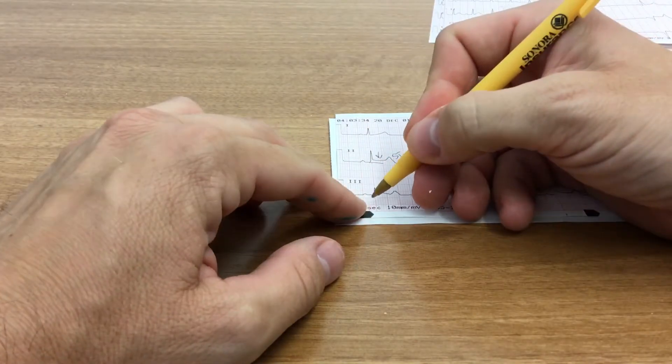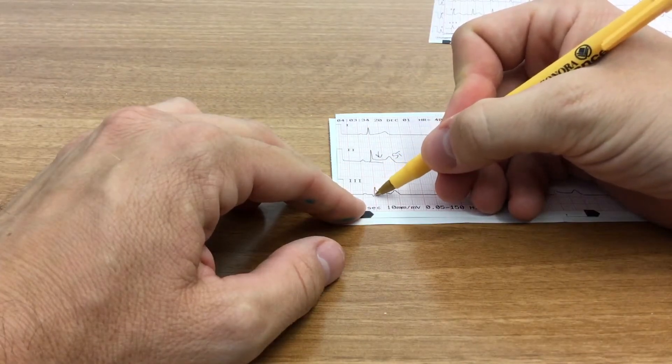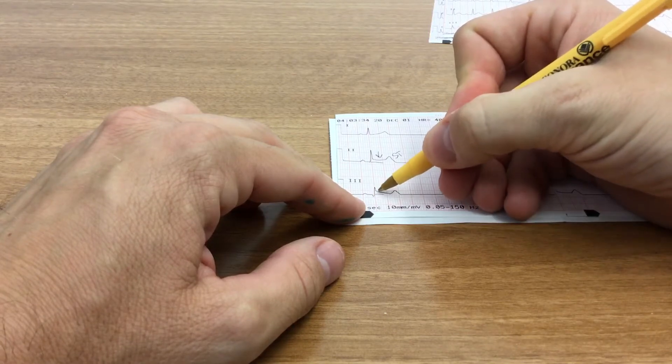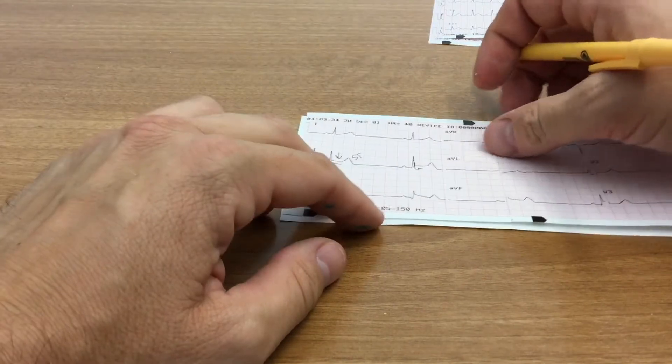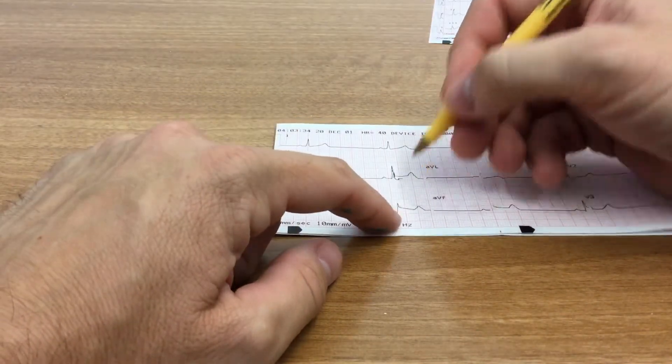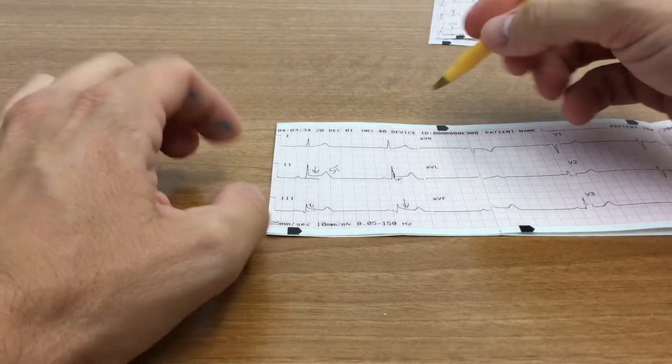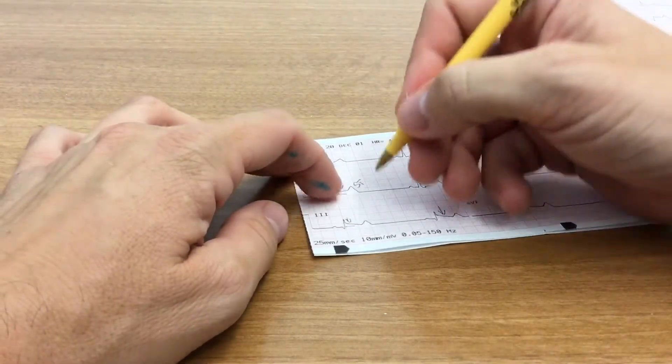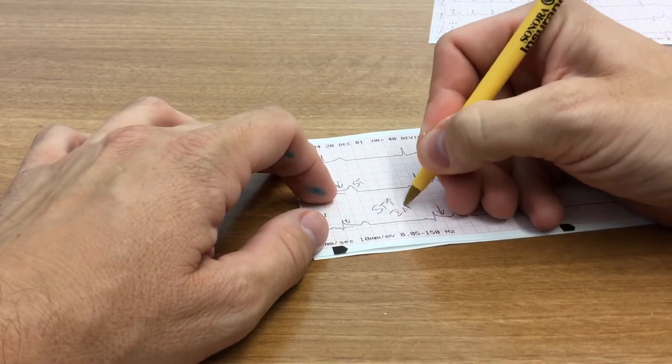Moving down to lead 3, again, you can see that you have the baseline here. And again, you can see that you have elevation above that baseline. And we also see that in AVF, or augmented vector front, where I have the ST elevation. So we would say that we have ST elevation in the inferior leads.